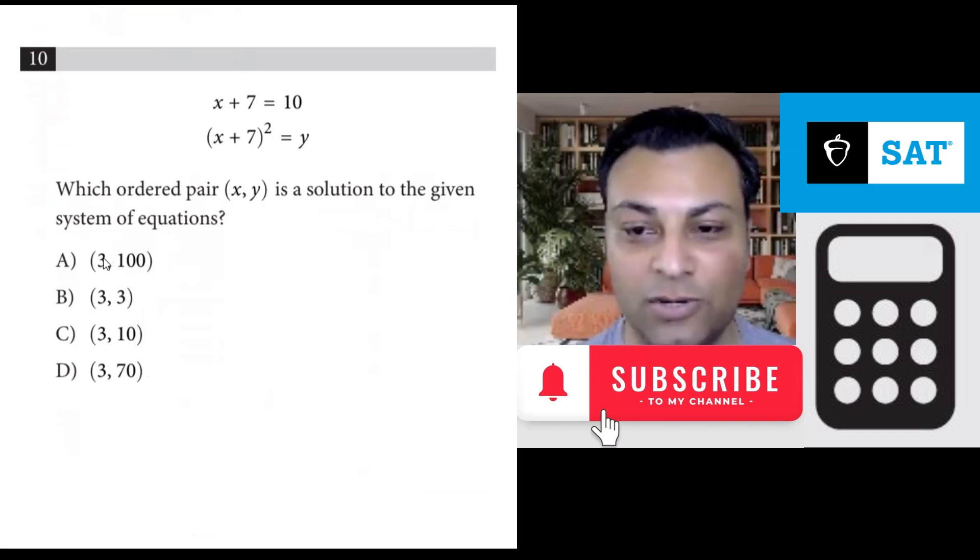They tell us in all the options that x equals 3. They already give that to us. We can see from here x plus 7 equals 10. If you subtract 7 from both sides, you get x equals 3. We knew that because all the options have x being 3.